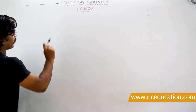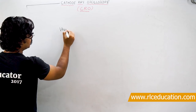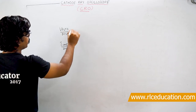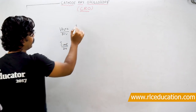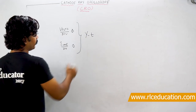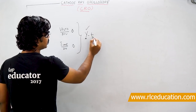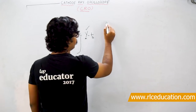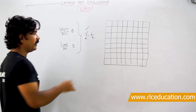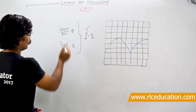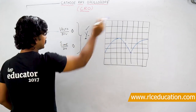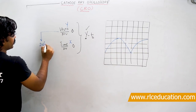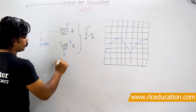A CRO has two types of setting adjustments: volts per division and time per division. These are two knobs on the front panel of the CRO. These knobs are used when operating in YT mode - Y axis represents the unknown voltage (volts per division), and X axis represents the time signal (time per division). For example, if volts/div = 1 V/div and time/div = 10 ms/div, you can read off voltage and time values from the screen.